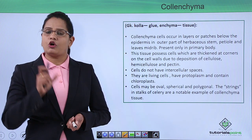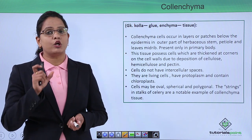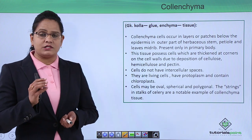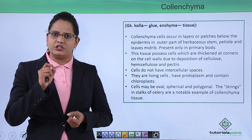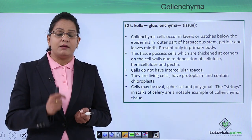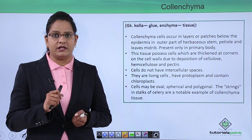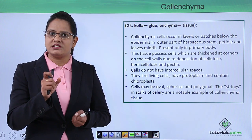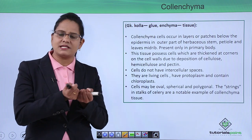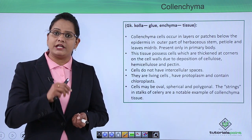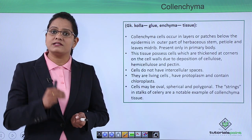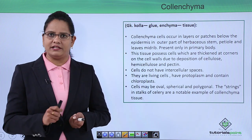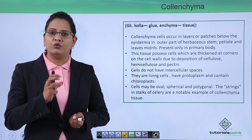The word colenchyma originated from the Greek word 'kola,' which means glue, and 'enchyma' means a tissue. Have you seen a green stem? If you try bending it, it bends very easily, but when you try to break it, it is very tough. Comparatively, a stick made of dead tissue is easier to break. A young herbaceous stem bends easily but is very tough to break, and this property helps young plants overcome environmental stresses — all because of colenchyma tissue, which acts like glue, binding cells together and providing rigidity.